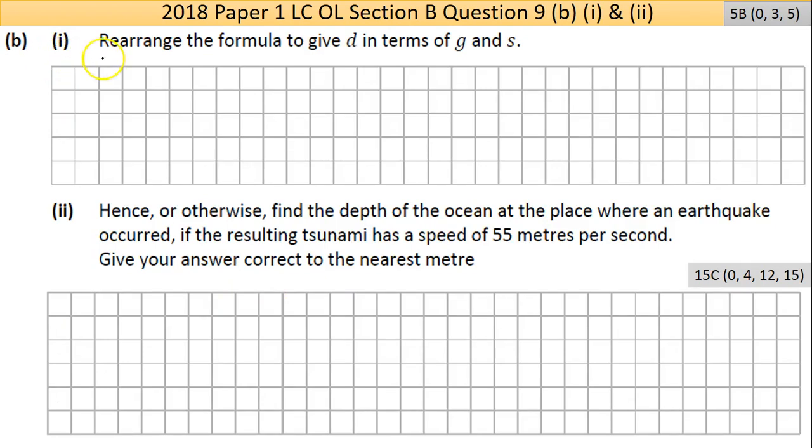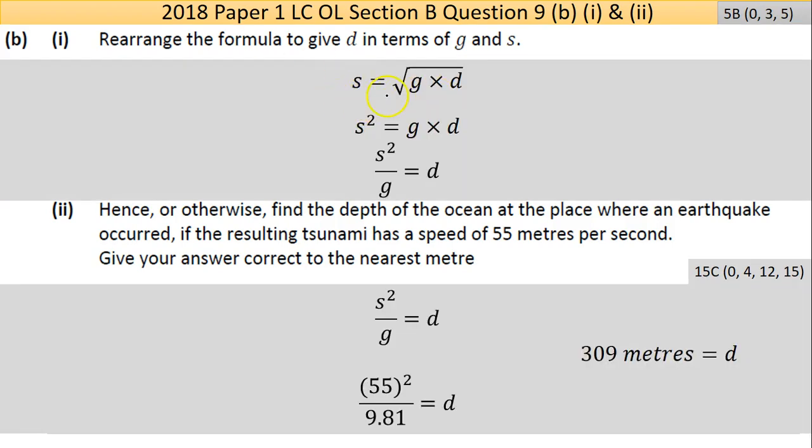Question nine, part B. Part one says rearrange the formula to give d in terms of g and s. This is really easy. Rearranging a formula should be no problem. You're just using the rules of algebra, just not putting numbers in and just moving things around. As long as you're consistent, you're not going to be wrong. I've set off my formula here.